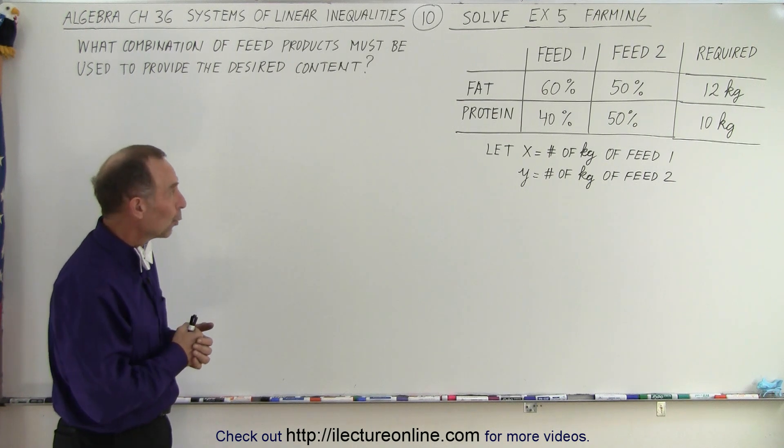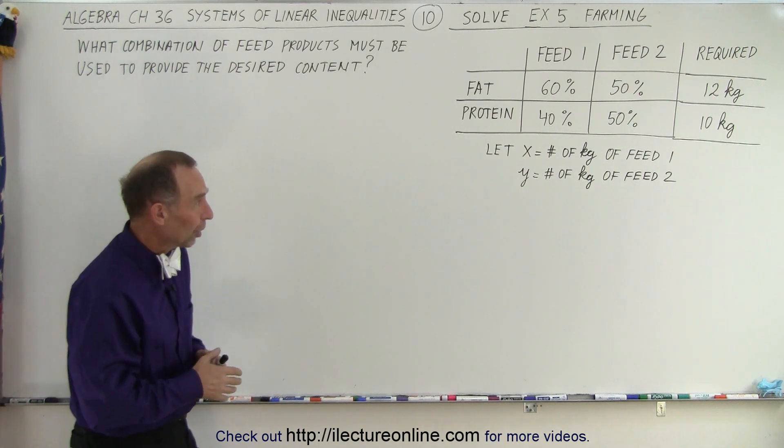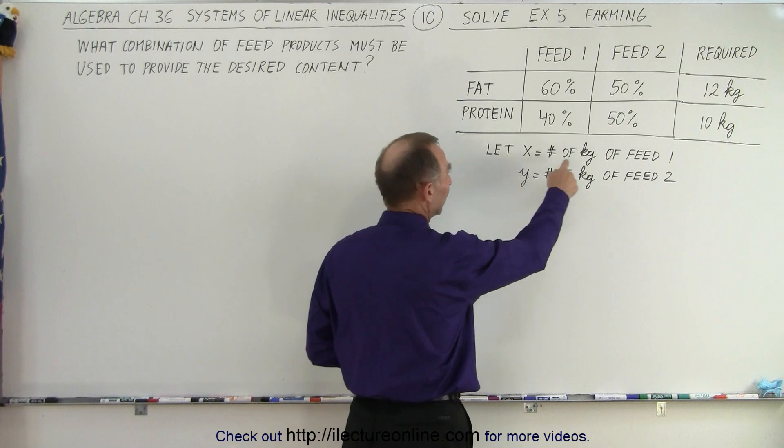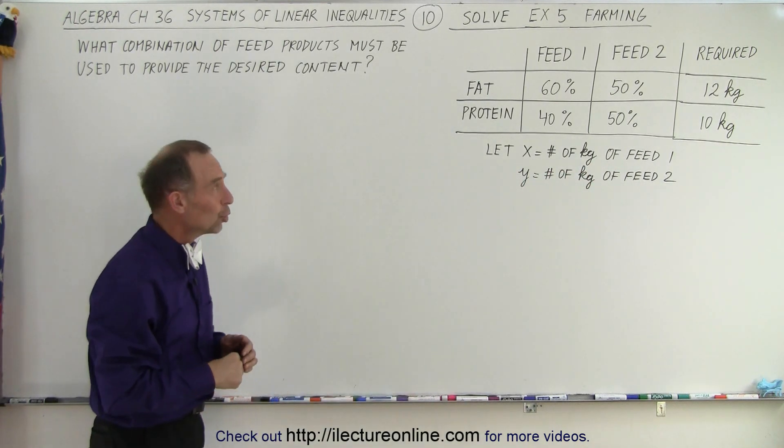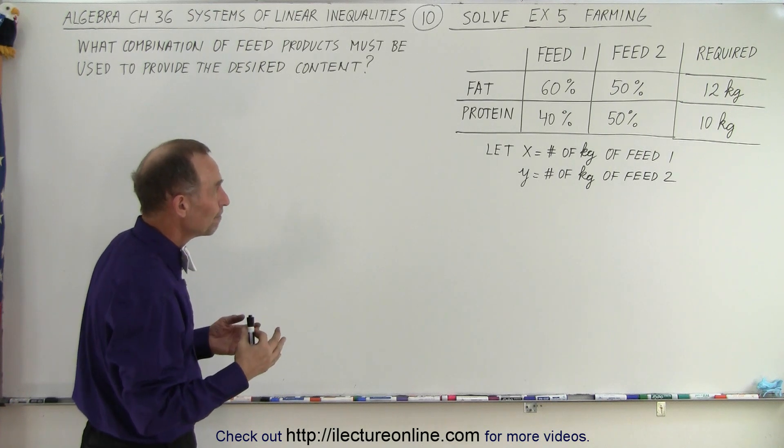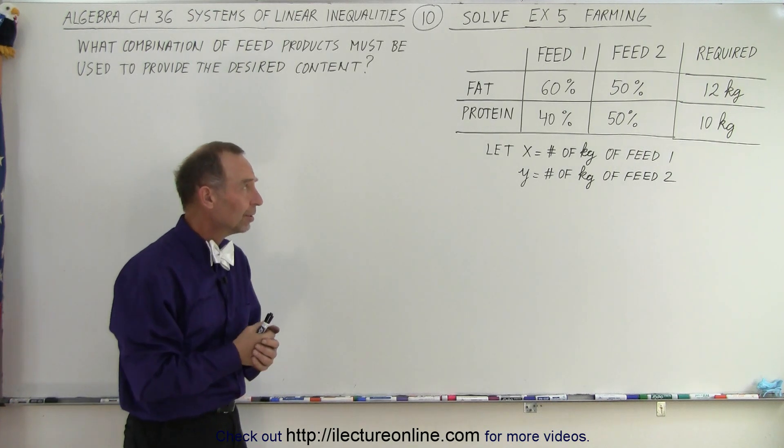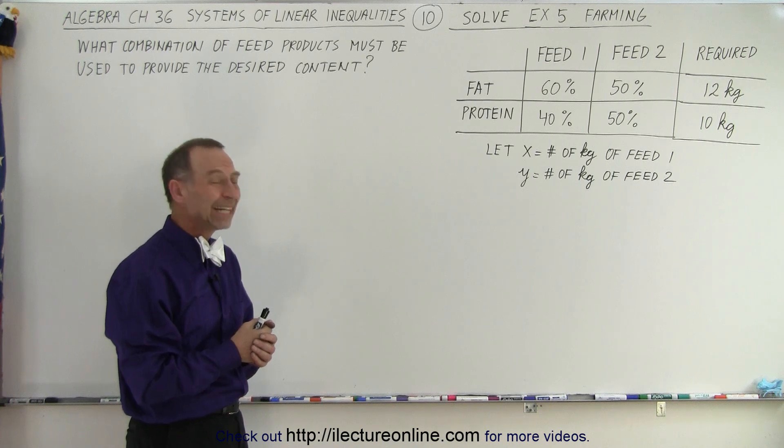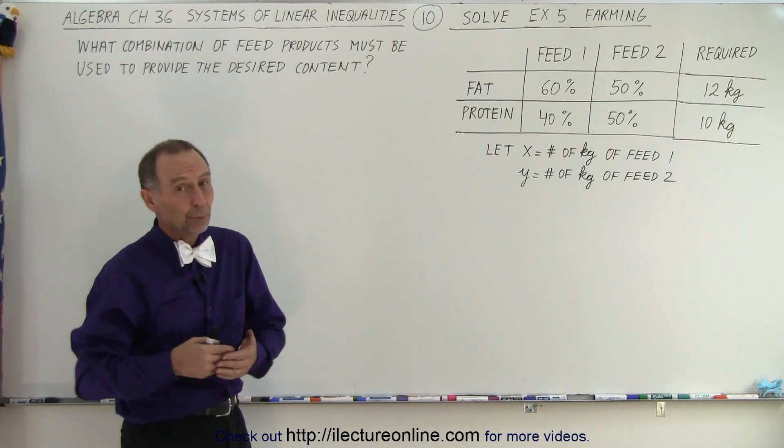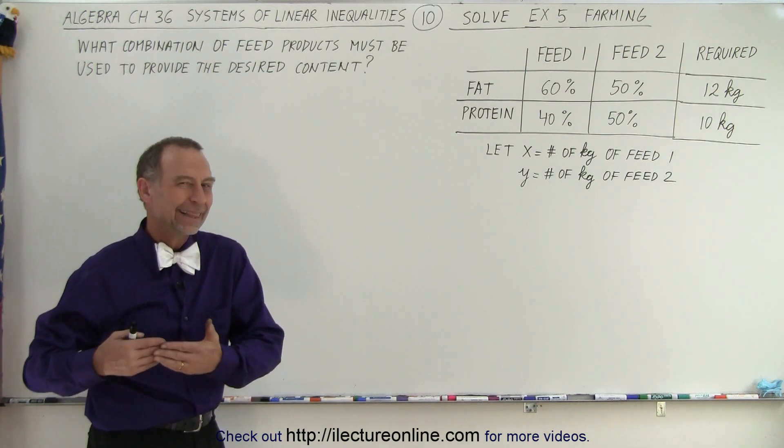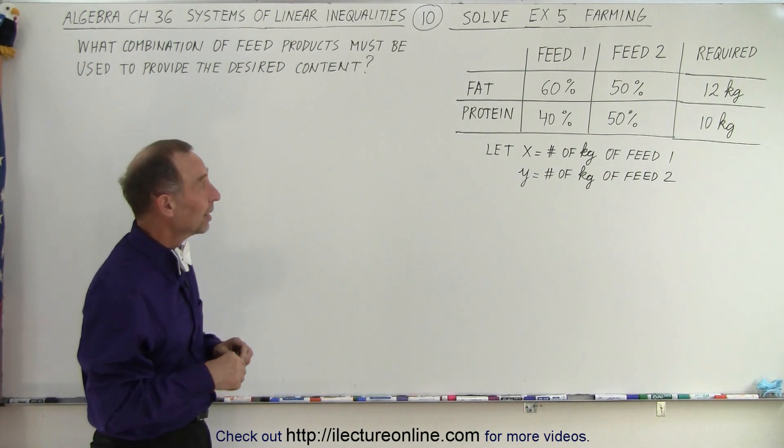We can start with representing x as the number of kilograms of feed one and y the number of kilograms of feed two. And then we want to come up with some inequalities, because essentially we want at least 12 kilograms of fat and 10 kilograms of protein. We can have more of it, but not less. That's why we need inequalities and not equations.